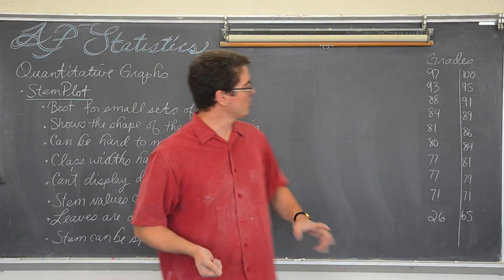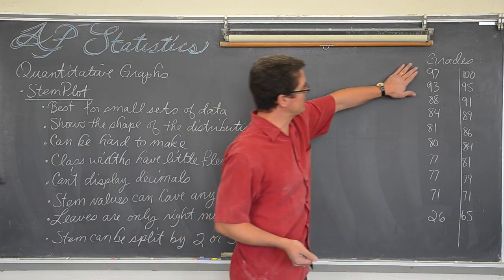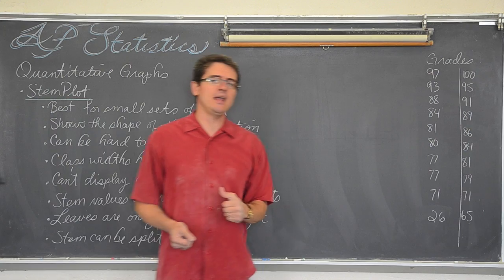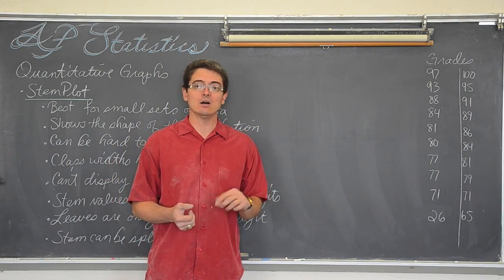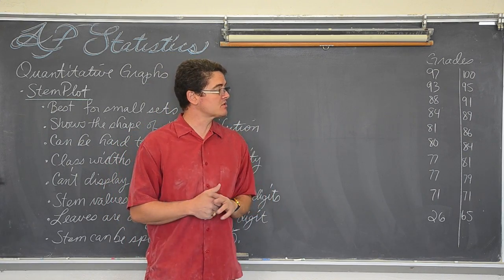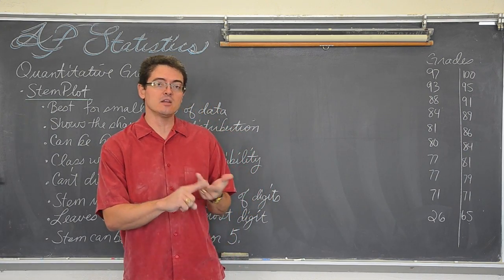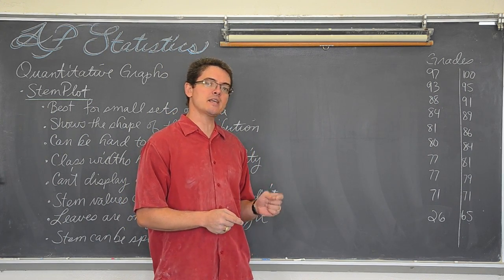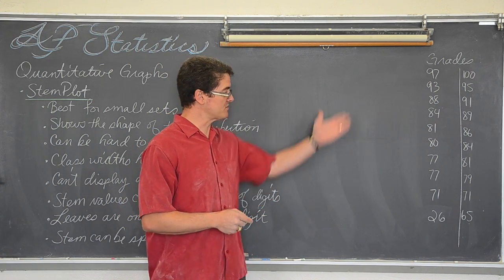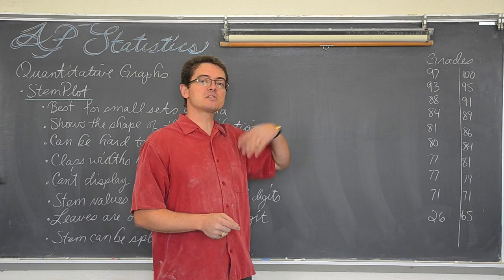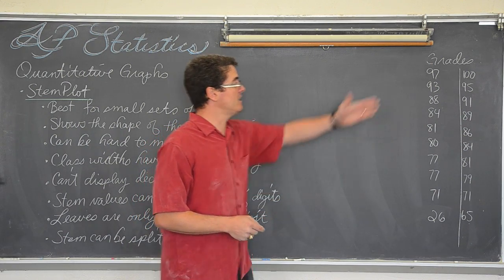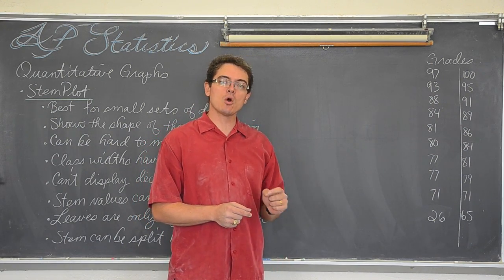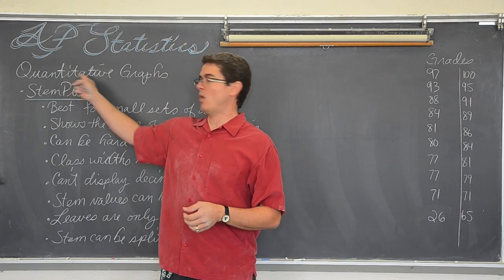So what the heck is a stem and leaf? We are going to look at this row of grades. In the last video I handled these grades as categorical data — we used them to determine people's grades of A, B, C, D, or F. Now I am not going to do that. I want to use the numbers the way they sit. So I am not going to assign them a letter grade. That means that my numerical values are not going to be categorical in this example — it is going to be quantitative.